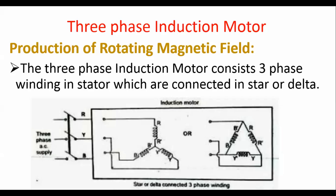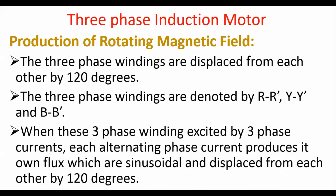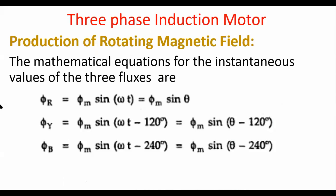These three fluxes are sinusoidal and displaced from each other by 120 degrees. The mathematical equations are: φR = φm sin(ωt) = φm sin(θ); φY = φm sin(ωt − 120°) = φm sin(θ − 120°); φB = φm sin(ωt − 240°) = φm sin(θ − 240°).